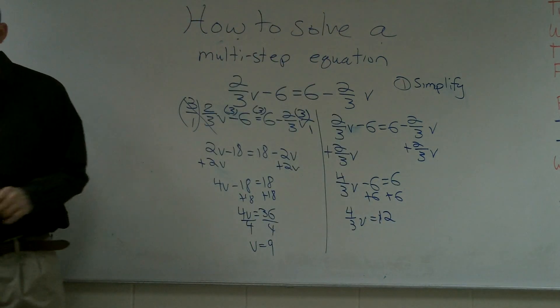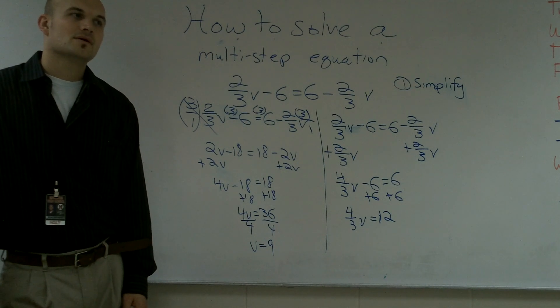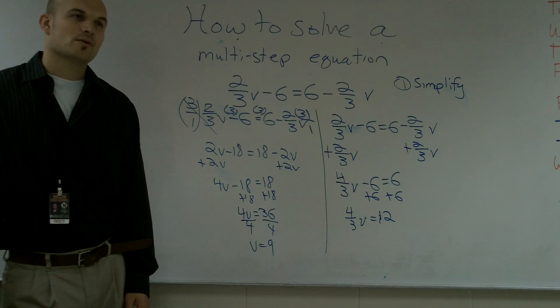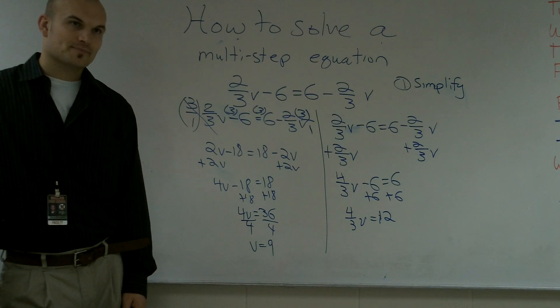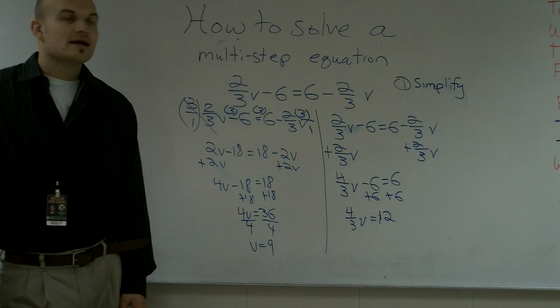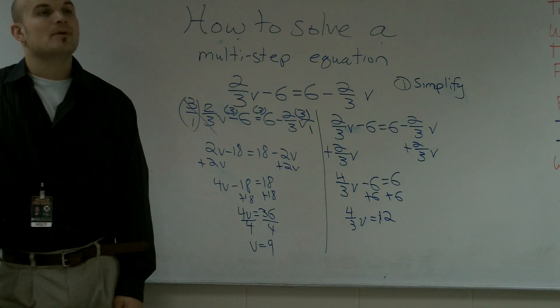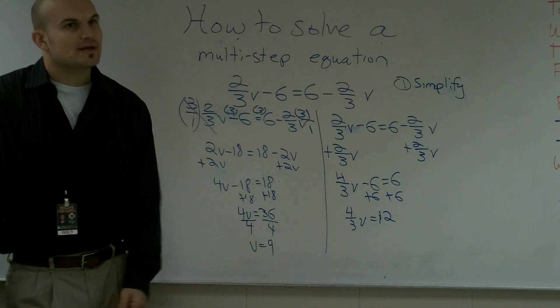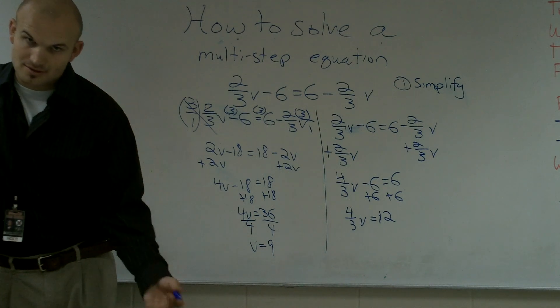Now, hold on one second. So guys, now what I have to do, what's happening to my variable? Somebody raise their hand, please tell me what's happening to the variable. What is that four-thirds doing to the variable? Yes. It's multiplying by four-thirds. So, we have to divide by four-thirds. But we don't ever divide our fractions, do we? Instead of dividing by fractions, we multiply by the reciprocal.